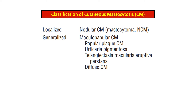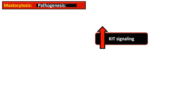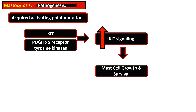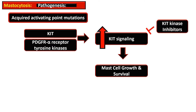Human mast cell proliferation is dependent on KIT ligand, and KIT is the receptor for stem cell factor. There is increased KIT signaling in many mastocytosis cases due to acquired activating point mutations in KIT. Less frequently, there is mutation in platelet-derived growth factor receptor alpha tyrosine kinase. The resultant increase in KIT signaling leads to mast cell growth and survival, leading to use of KIT kinase inhibitors as a treatment modality.